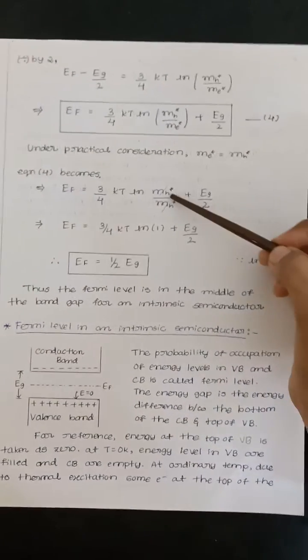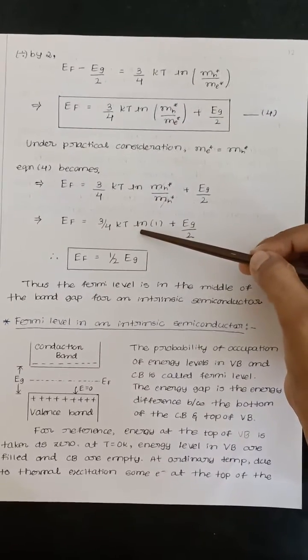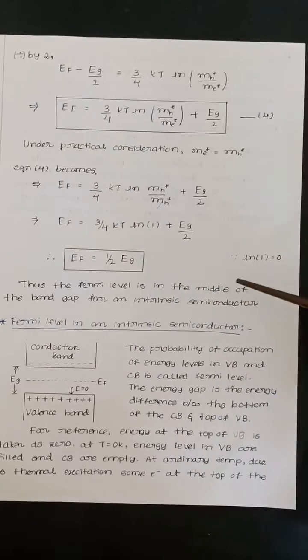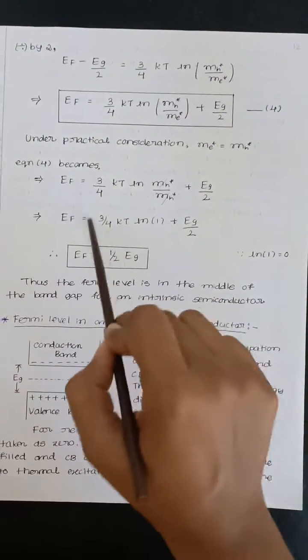Plus EG/2. This got cancelled, what will remain? It will become ln of 1. So ln of 1 is nothing but 0. Then this part will become 0.